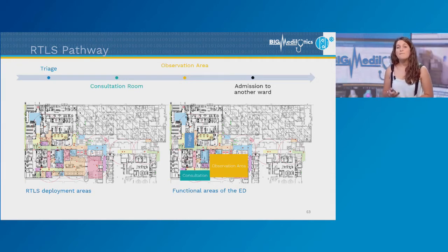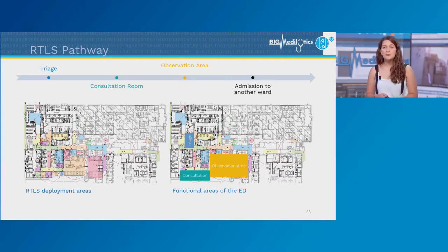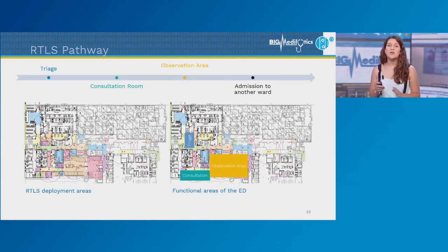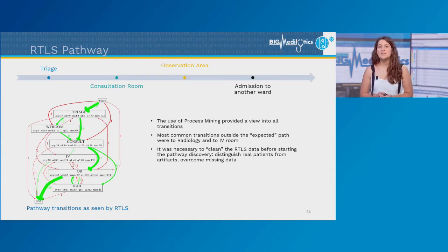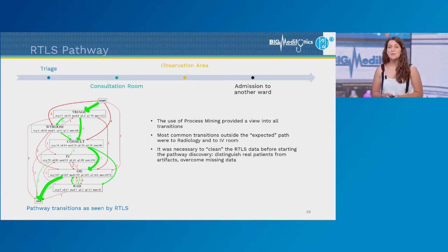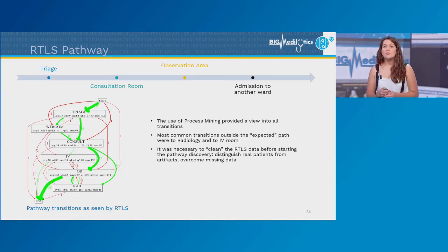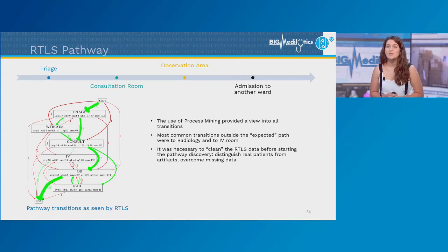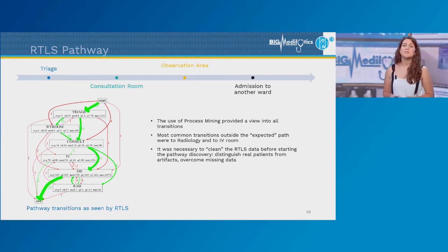The floor plan shows room-level accuracy or even smaller — we can segment corridors and divide rooms for better understanding of patient paths, though we can only monitor patients in areas where RTLS is installed. The patient pathway goes from consultation to the observation area, then to another ward where the wristband is removed and the pathway is deemed complete. After processing and filtering patient data and overcoming missing data events, we applied process mining techniques to determine real patient movements and detect potential deviations and bottlenecks. As seen in the graph on the left, three locations outside the expected pathway were identified: the waiting room, the IV room, and the radiology department.